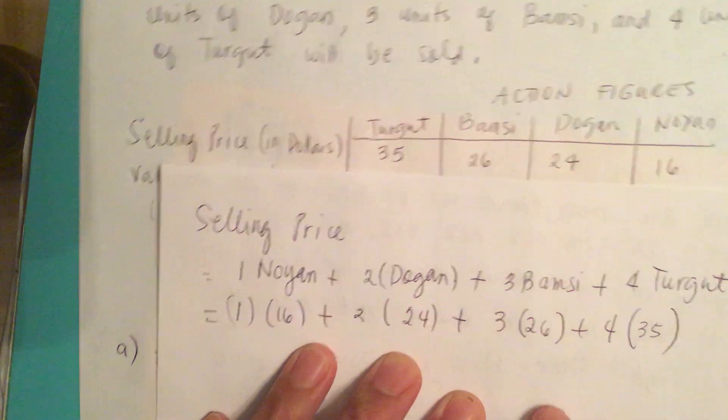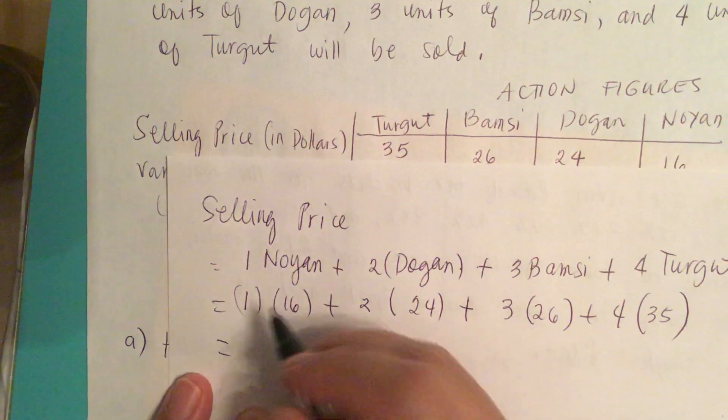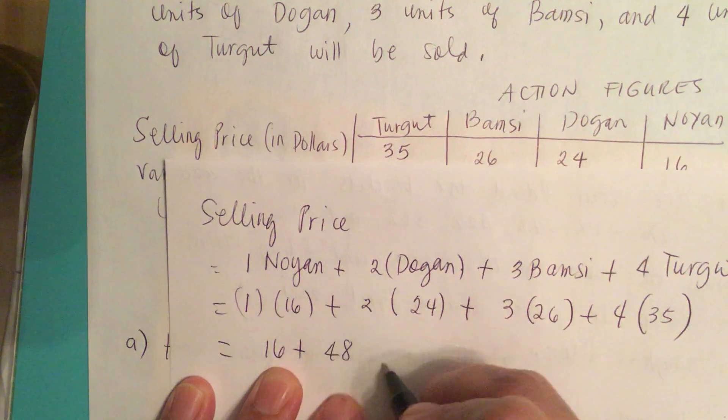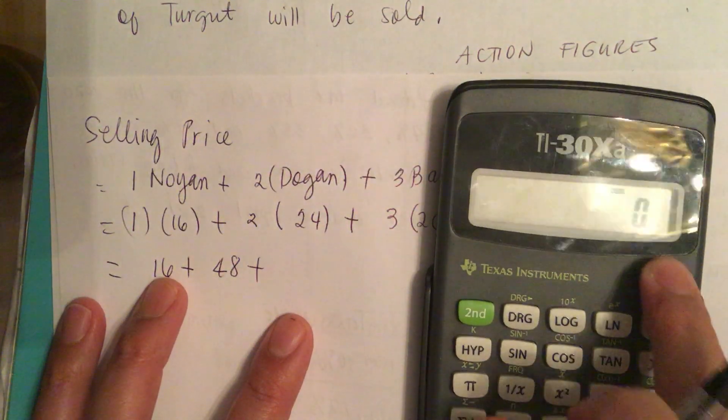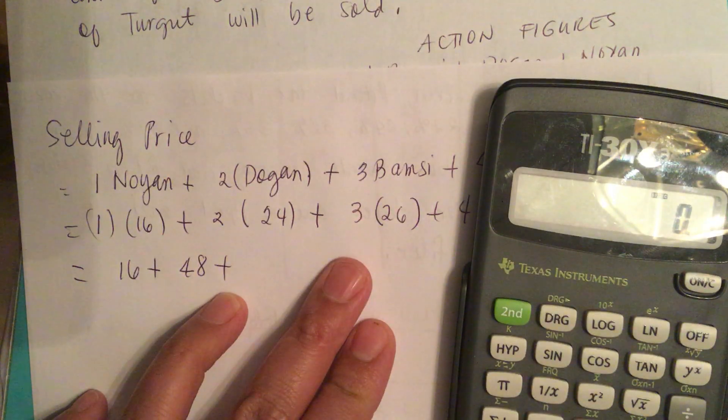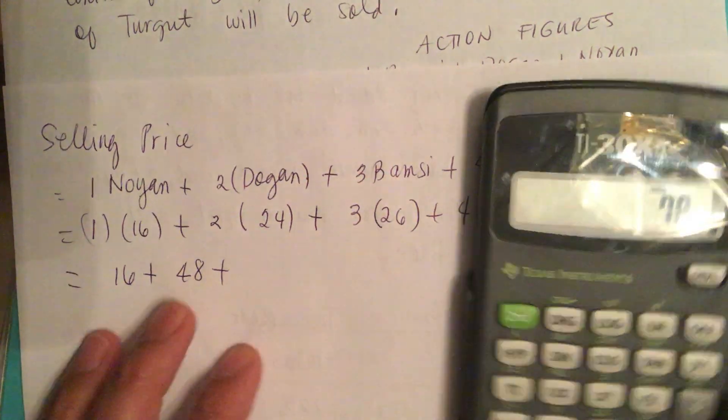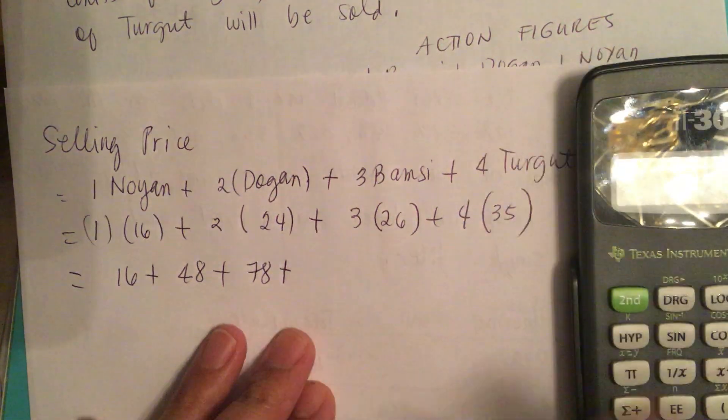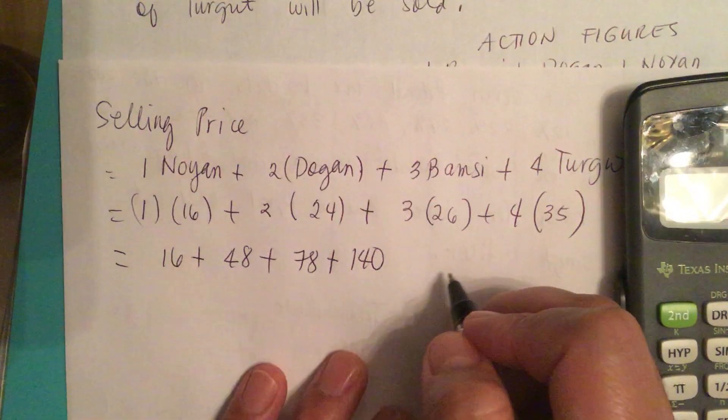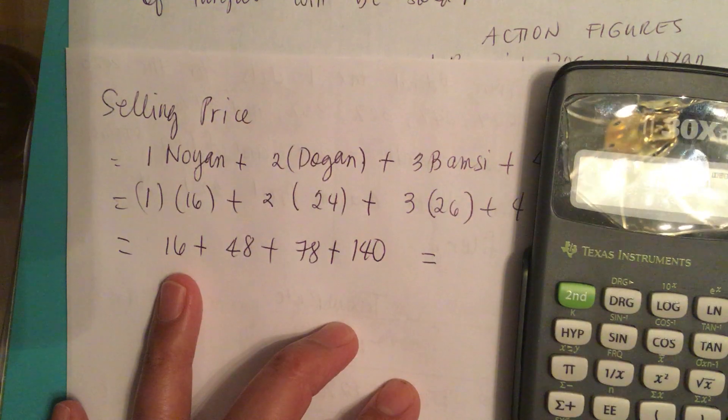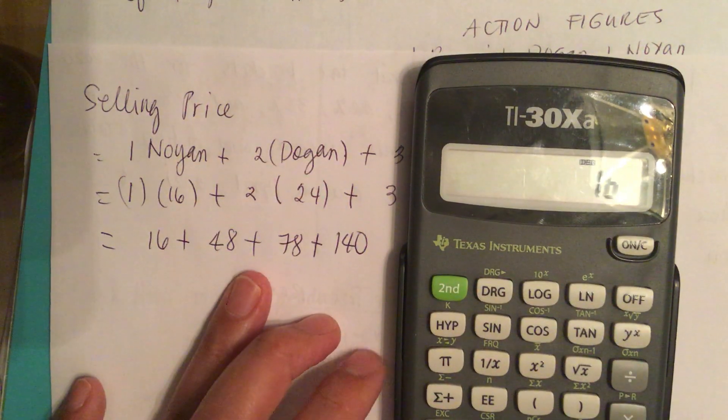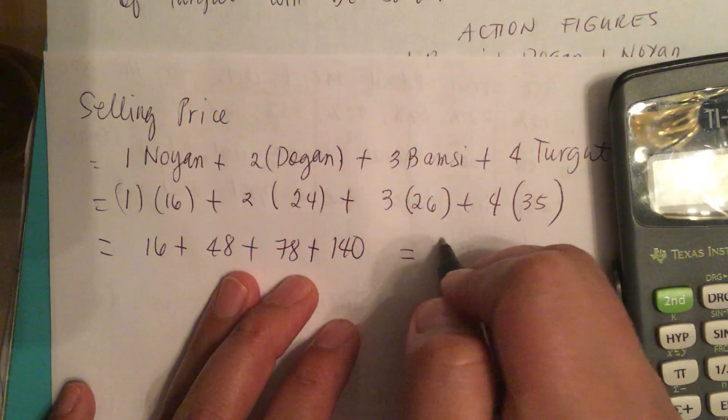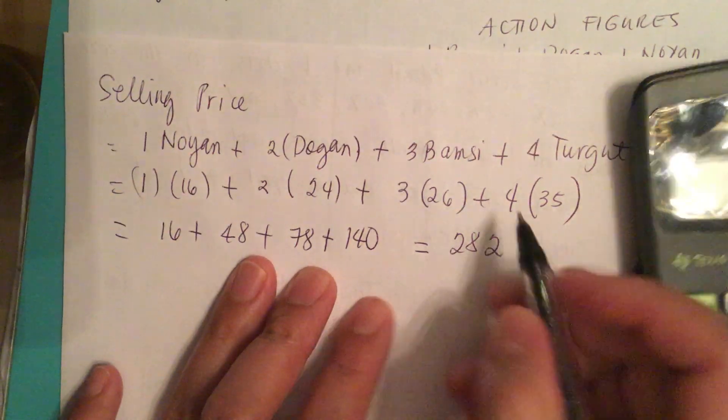So this is equal to 16 plus 48 plus 78 plus 140, is equal to $282.